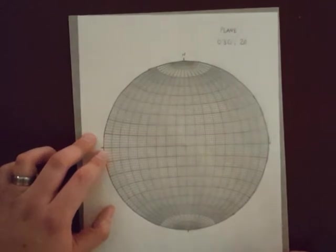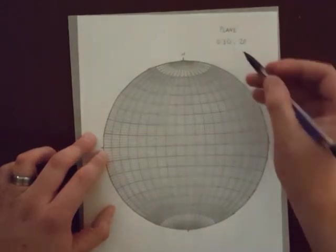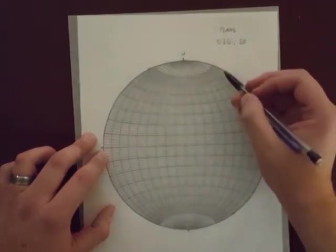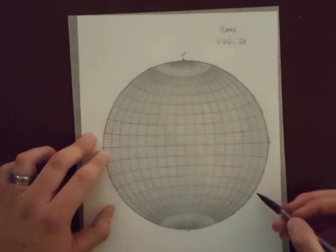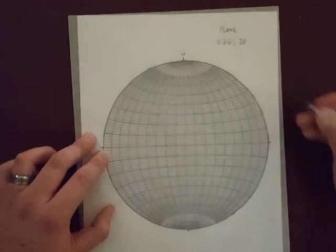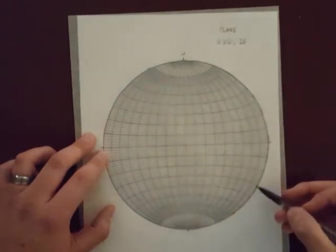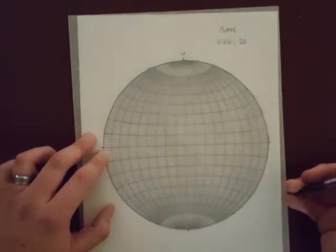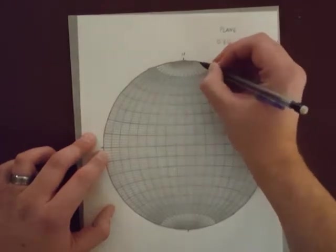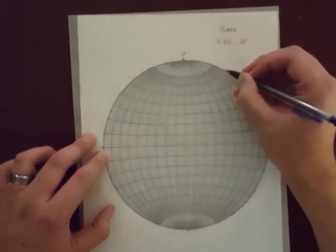Since I'm using right-hand rule and because the strike is 030 or somewhere in the northeast quadrant, I know that the plane dips to the southeast. Because I know that strike is a horizontal line that lies within the plane, I know that it plots where all horizontal things do, somewhere on the primitive circle. So 030 or 30 degrees east of north, 10, 20, 30 is right here.